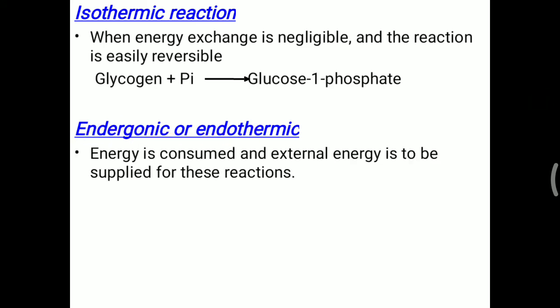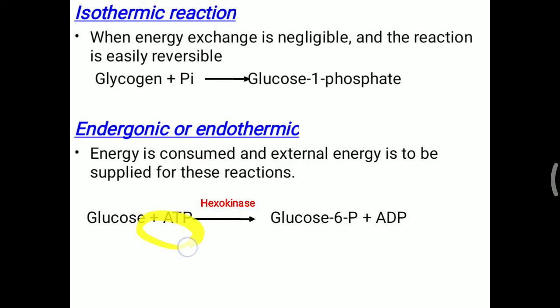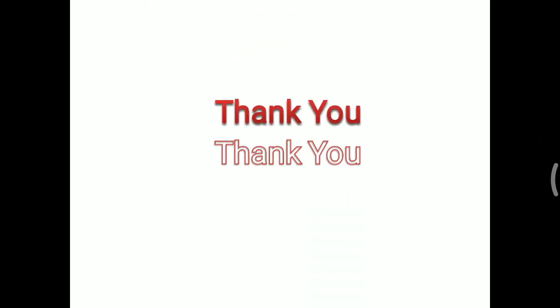The third type is endergonic or endothermic reaction, where energy is consumed and external energy must be supplied. For example, glucose must be converted into glucose-6-phosphate, for which ATP is utilized and converted into ADP. One high-energy bond from ATP is used in the presence of hexokinase enzyme. So that is an endergonic or endothermic reaction. Remember these three types — exothermic, isothermic, and endothermic — for the thermodynamic consideration of enzyme reactions.